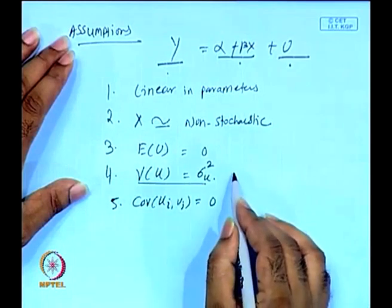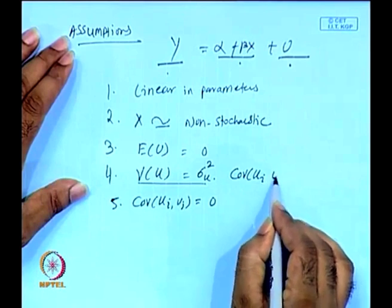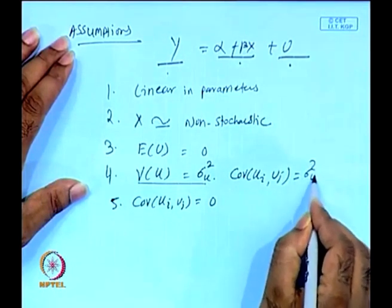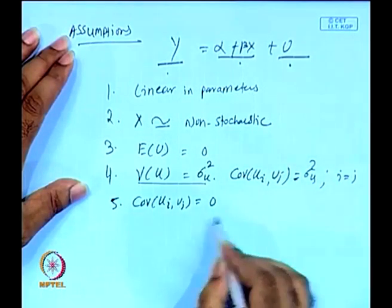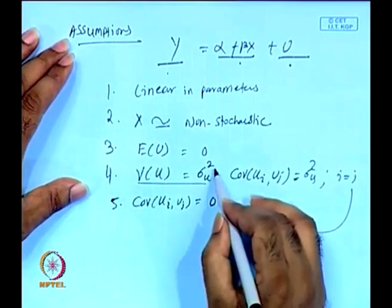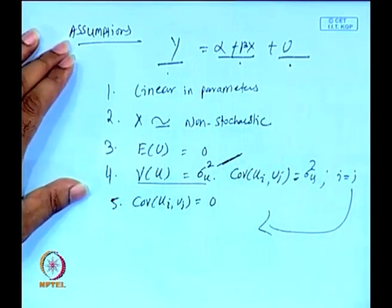The variance of u means cov(uᵢ, uⱼ) = σ²u when i = j, and 0 when i ≠ j. This structure is called homoscedastic — when the variance of the error term is exactly equal to a constant. If that is not the case, the problem is called heteroscedastic, which is a serious problem in econometric modeling. We have a special component on heteroscedasticity — how to detect it and how to solve it — because until you solve it, the estimated model cannot be used for forecasting.